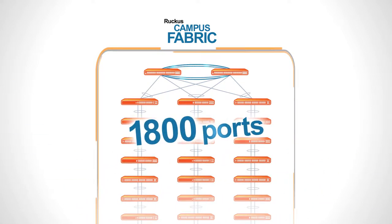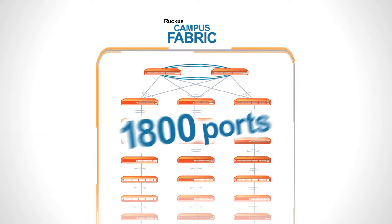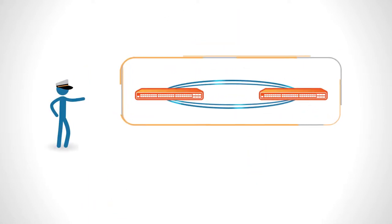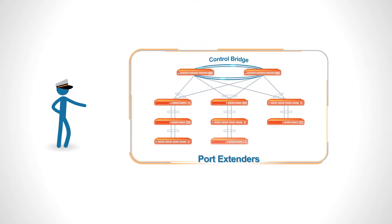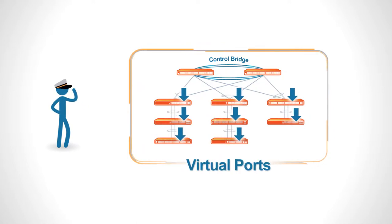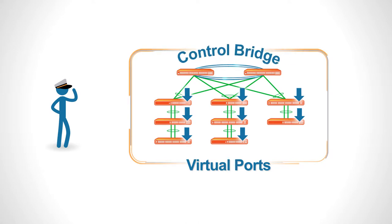It easily scales to 1800 ports using any of the ICX 7000 switch families. This single logical domain consists of a control bridge and access switches we call port extenders, because every port in the fabric becomes a virtual port extending from the control bridge.